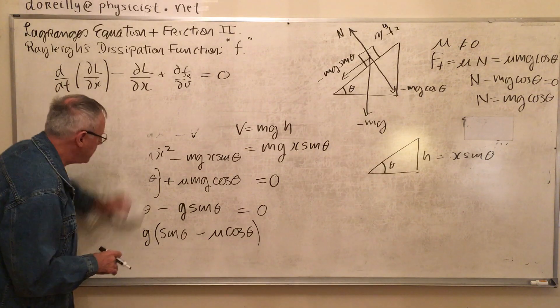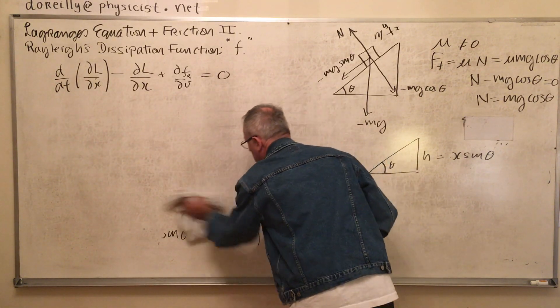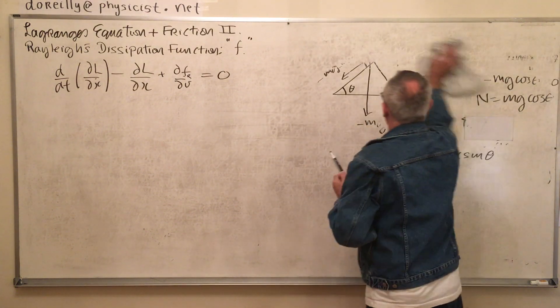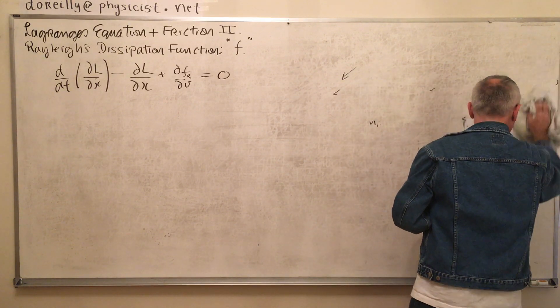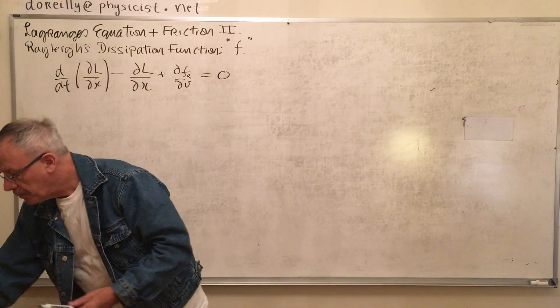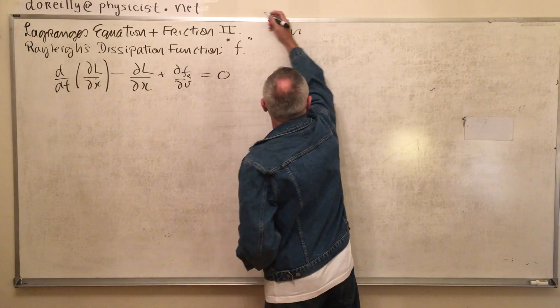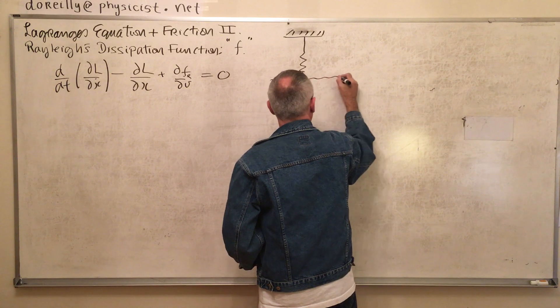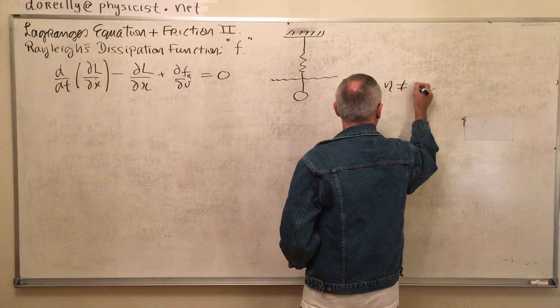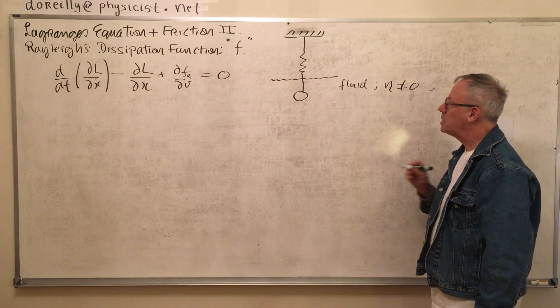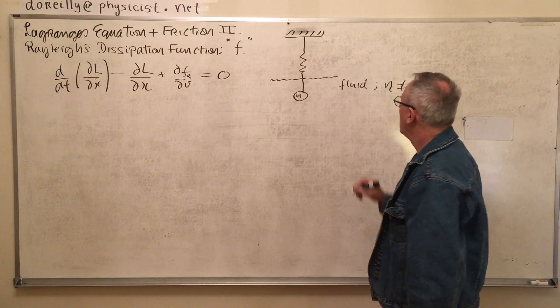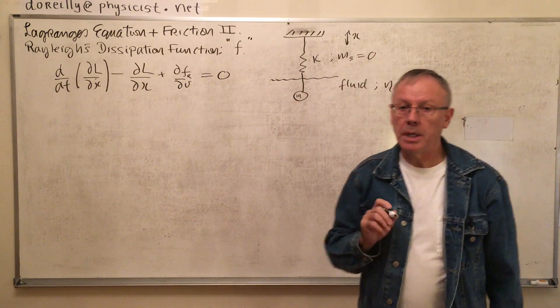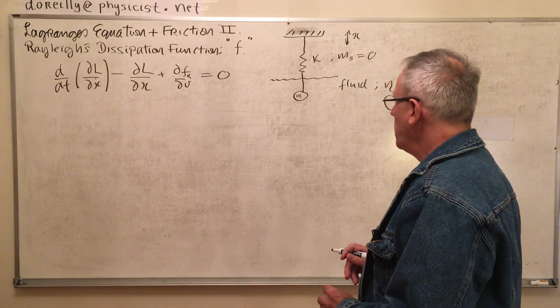Now the mistake I made in the last one was I did not specify that the spring had a mass which was either negligible or zero. So in an idealized case, this is coming up. What we had was a system like this. We had a fluid with a non-zero coefficient of viscosity which caused this mass to get damped in its motion, right? And this is the x direction. And the spring had a constant k. And I'm going to say now that the mass of the spring is negligible or zero. Actually set it to zero. It's an idealized case.